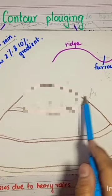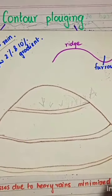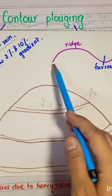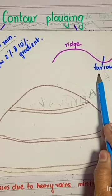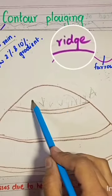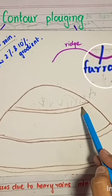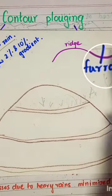Now you have to understand that in contour farming there are two things: ridges and furrows. A ridge is a raised platform where the crops are cultivated, and furrows are basically shallow depressions between the ridges or immediately after each ridge.